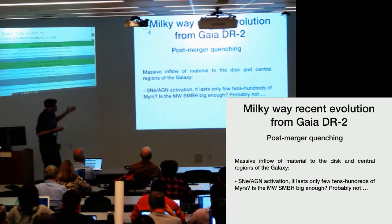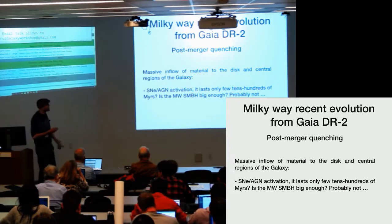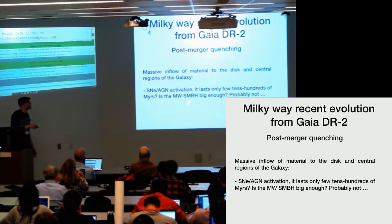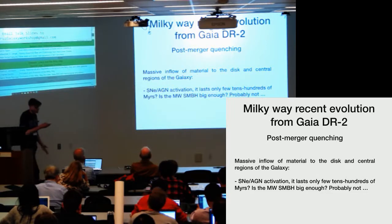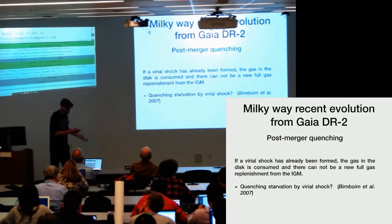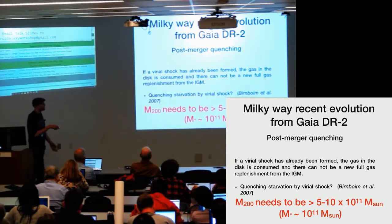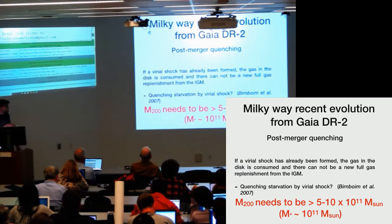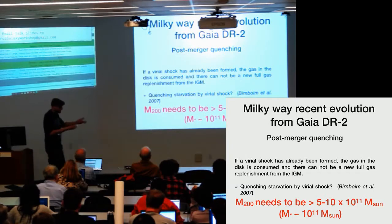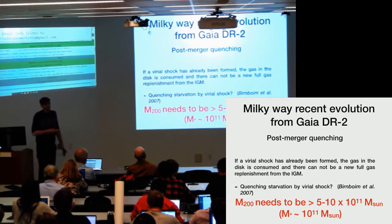Another possibility is the activation of the central AGN, but the supermassive black hole of the Milky Way is very small, so it would be a very local and very short-lasted quenching. Another possible mechanism would be the creation of a virial shock — if the Milky Way had enough mass, we need the galaxy mass to be about several times 10^11, almost 10^12 in total mass, or about 10^11 in stellar mass, to have the production of a virial shock and virial shock starvation.